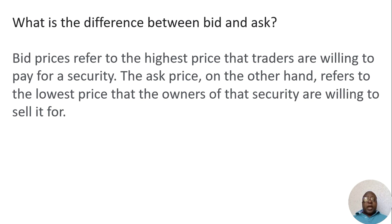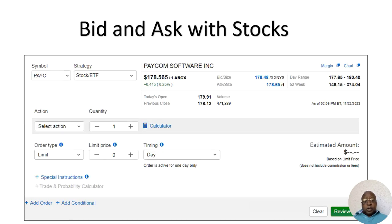The bid price refers to the highest price that traders are willing to pay for a security. The ask price, on the other hand, refers to the lowest price that the owners of that security are willing to sell it for. Now that's the technical definition. However, I found it to be a little bit the opposite.